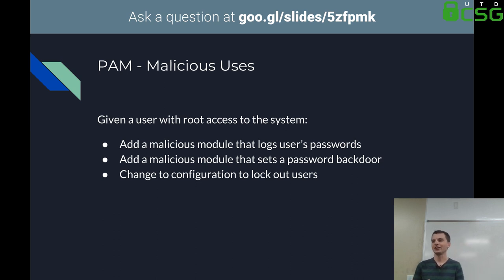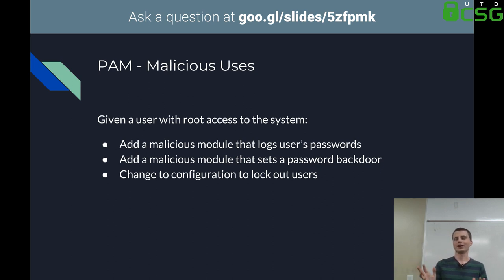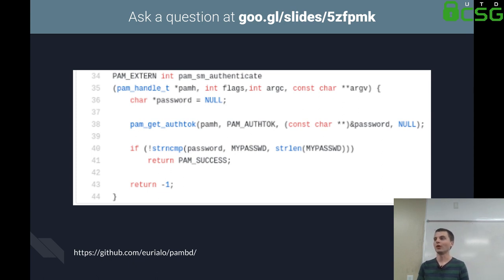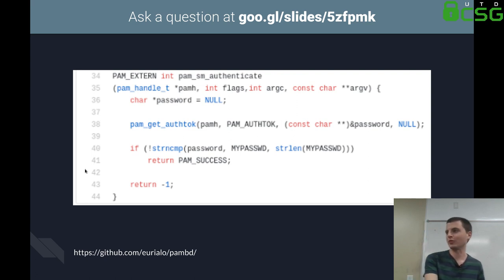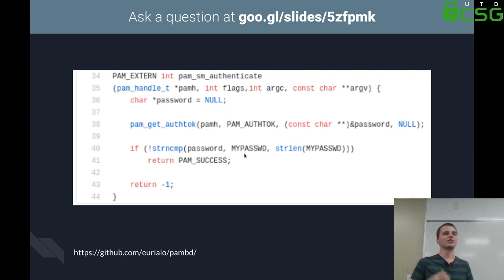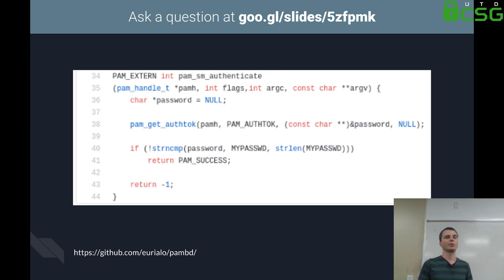It's also fairly easy to DOS people with PAM — if you've played with PAM you've probably locked yourself out. As an example of a malicious PAM backdoor, there's PAMBD on GitHub. It checks the user's password against a hardcoded string, and if it matches regardless of the user, authentication succeeds. Dropping this into SSH's PAM config gives a backdoor password to any user that can authenticate via SSH — very powerful.